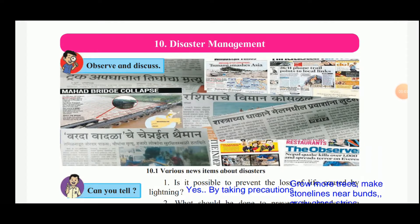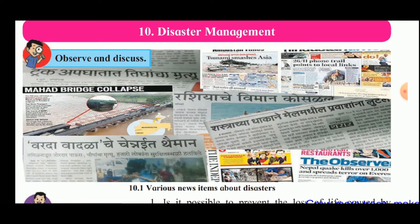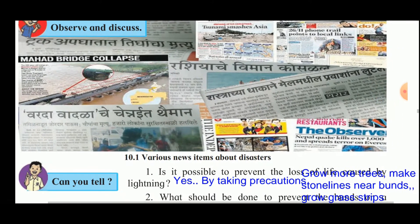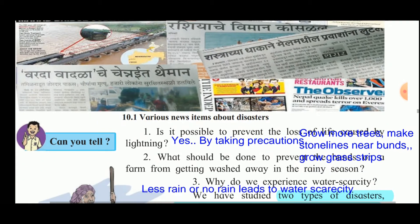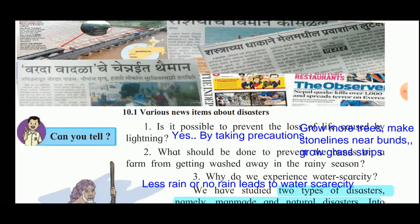Good morning students. Let us now see the next chapter: Disaster Management. Various news items about disasters are shown in the given figure. The first one is a truck accident, then the Mahad bridge collapsed, then a cyclone in Chennai, a train accident, and an aeroplane accident. All these disasters are news we read in the newspaper daily.